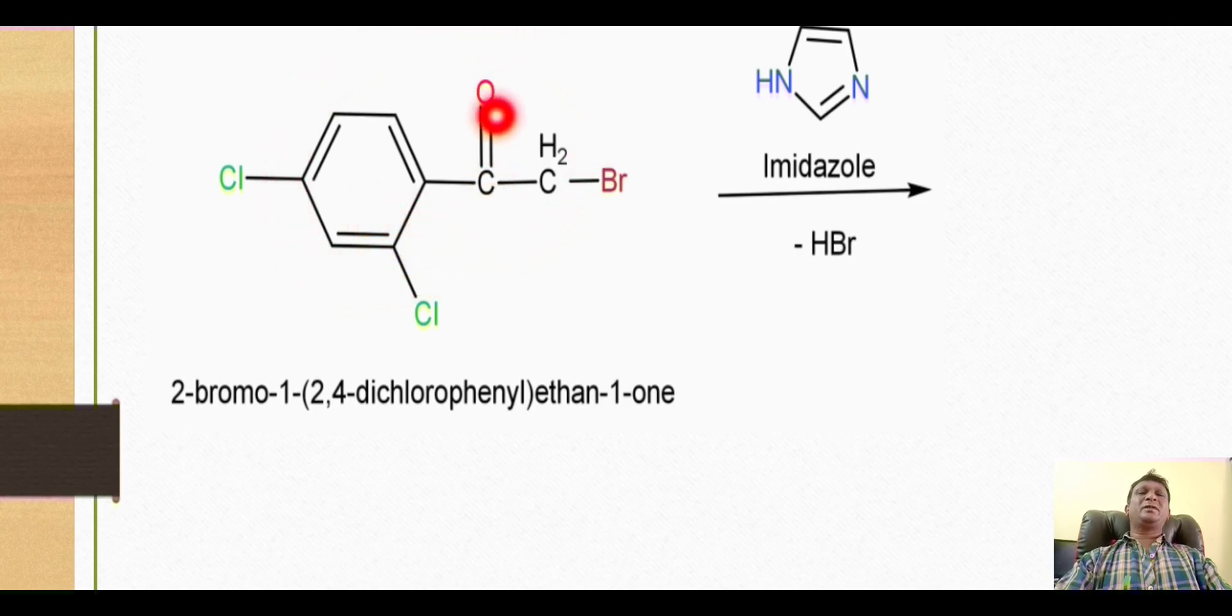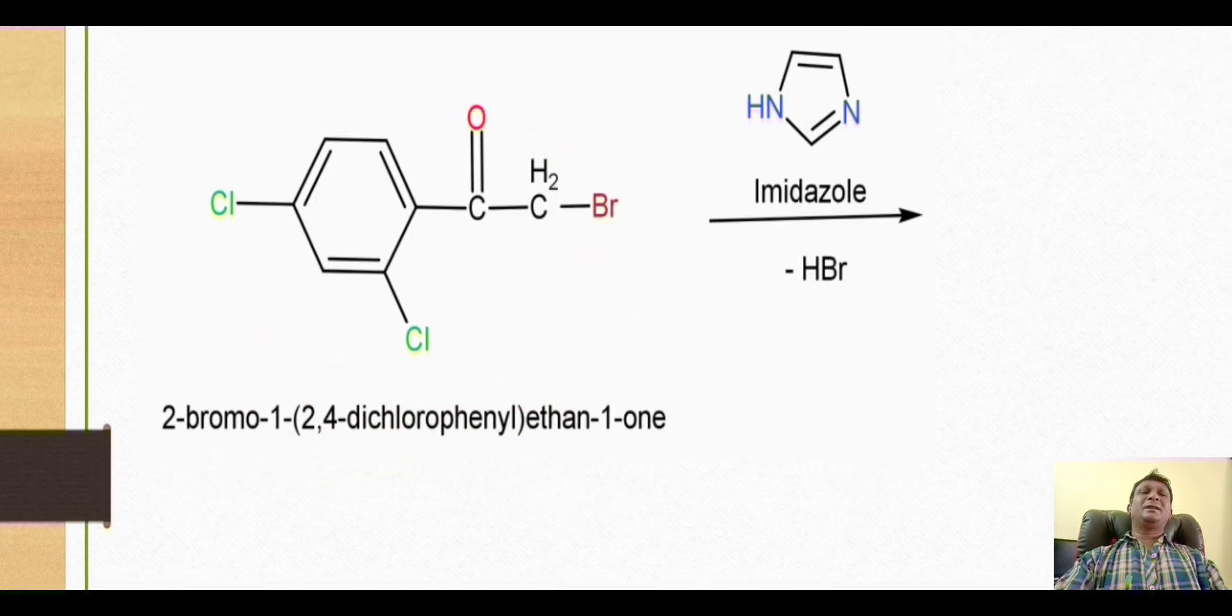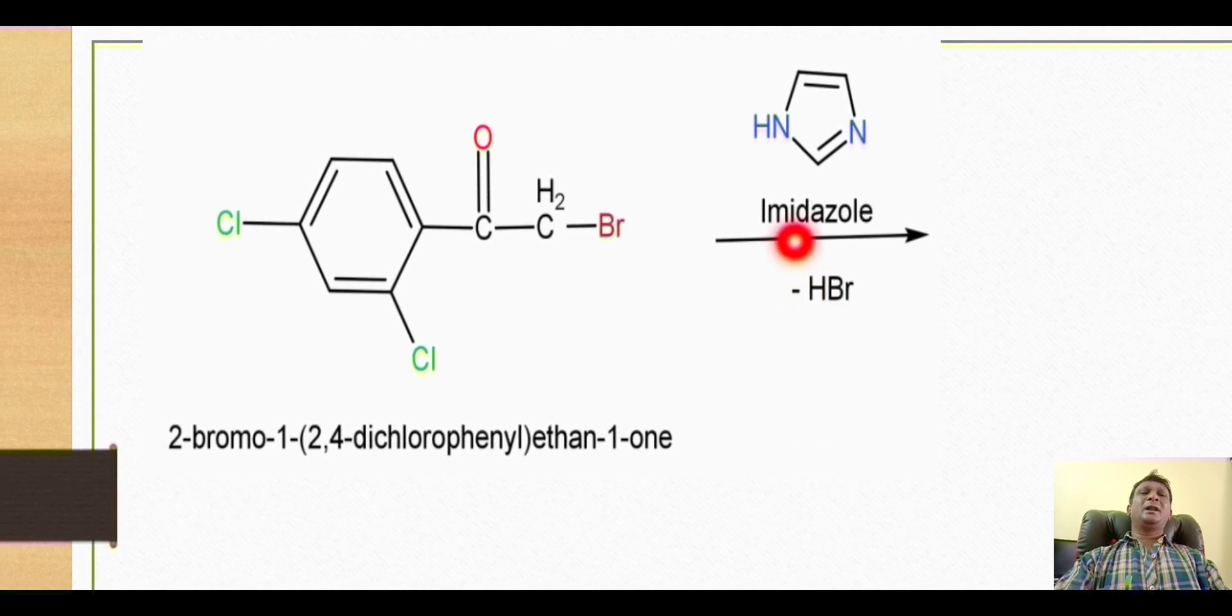The benzene ring along with CO and carbon is an acetophenone derivative. Carbon number two has a bromine substituent, and on the phenyl ring we have two chlorines at positions two and four. It is clearly a ketone - a two-carbon chain, so it is ethanone with this 2,4-dichlorophenyl ring. On position two we have a bromine. This is our starting material which reacts with the heterocycle imidazole.